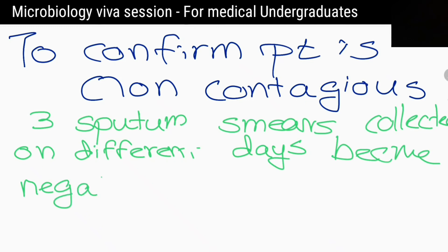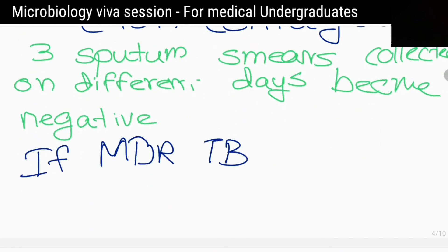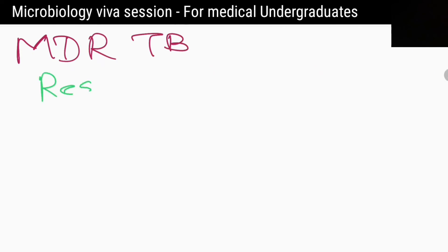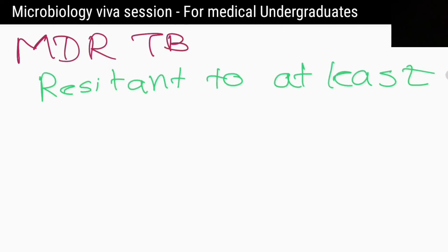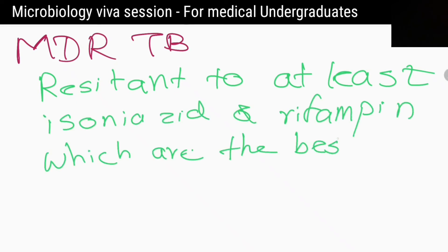But for multidrug-resistant tuberculosis, we need 3 negative culture results to confirm the patient is non-contagious. What is multidrug-resistant tuberculosis? When there is resistance to at least isoniazid and rifampicin, which are the best first-line treatment drugs for tuberculosis.